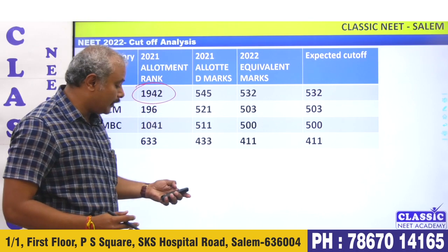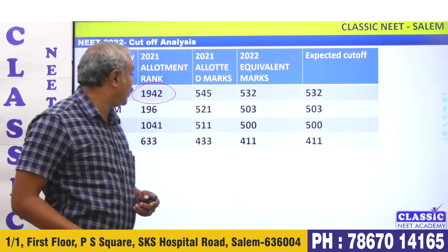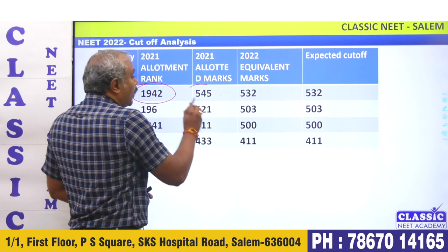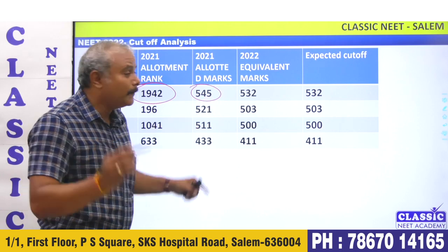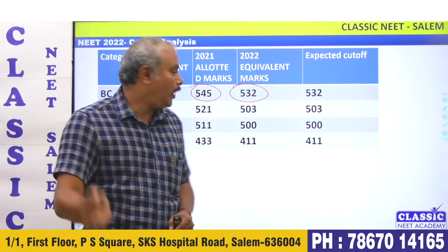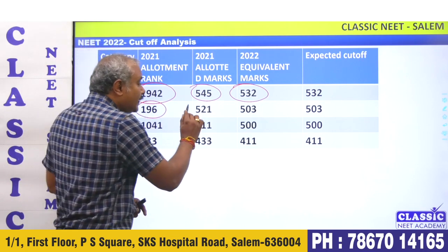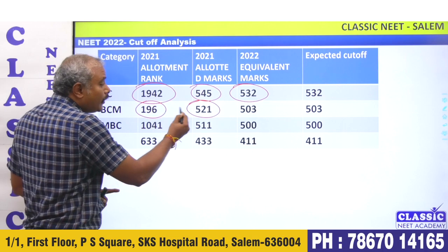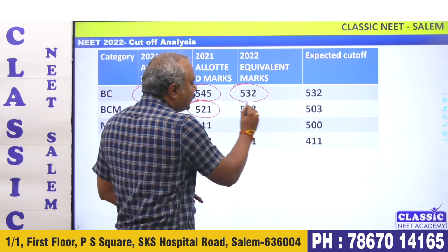Last year, in rank 1142, the mark is 545. Now the rank is 532 — cutoff for BC is 532. BCM last year was rank 196; first round allotment, BCM cutoff is 503.